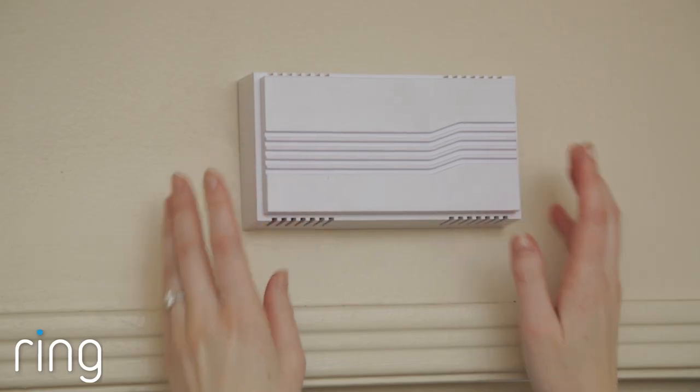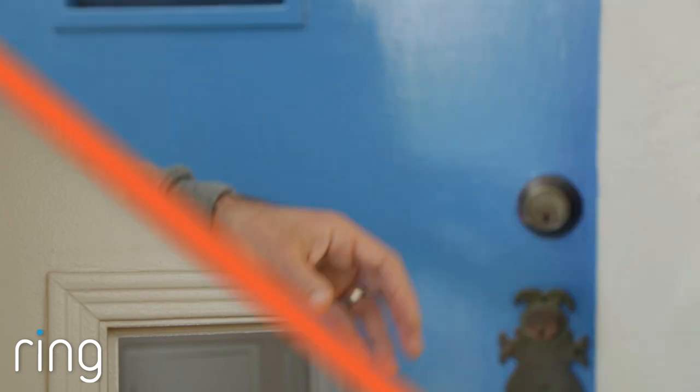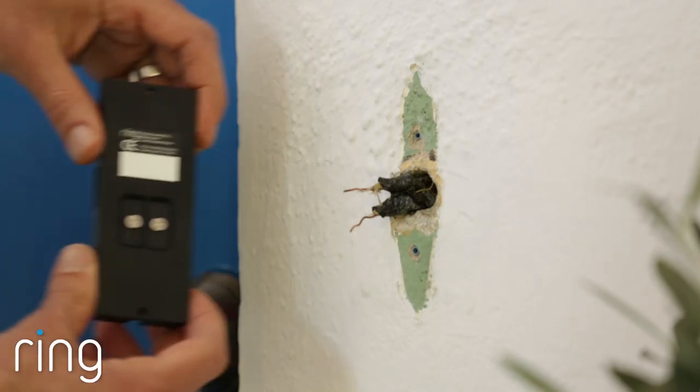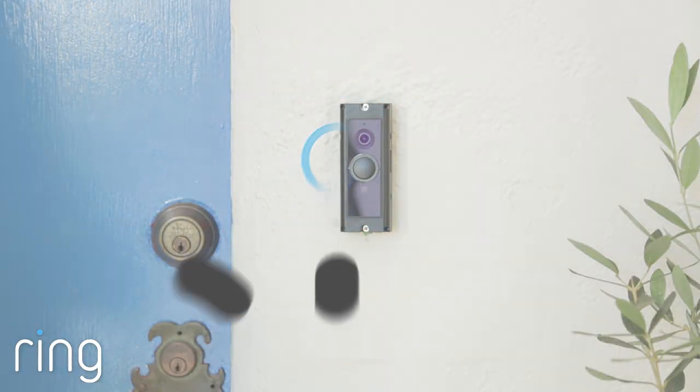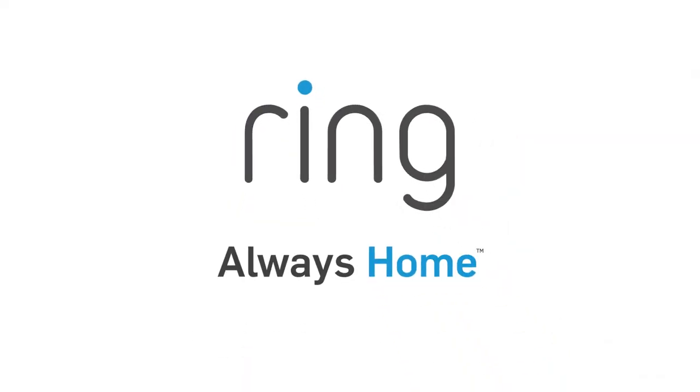Congratulations! You've successfully installed the Pro Power Kit. Now you'll need to head outside to install your Ring Video Doorbell Pro. With Ring, you're always home.